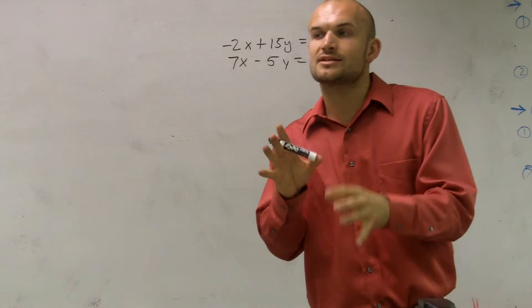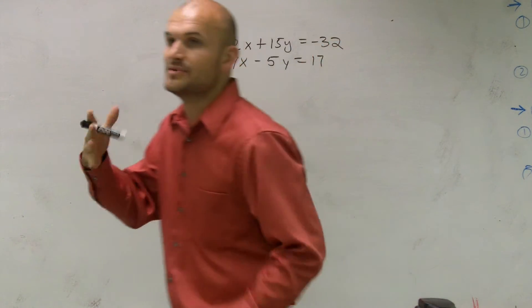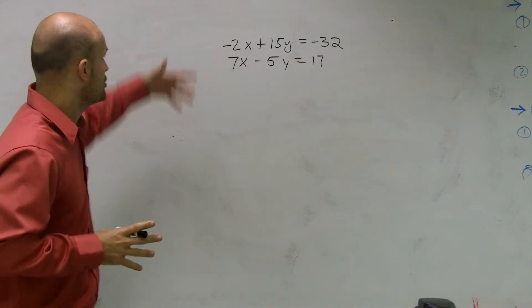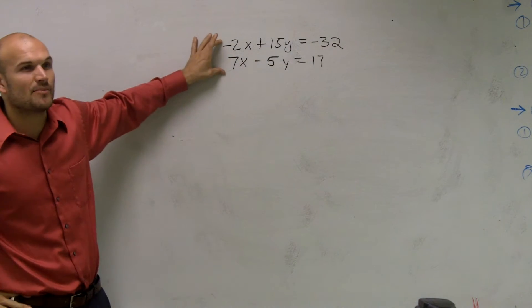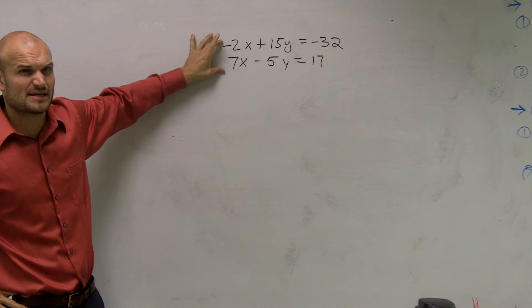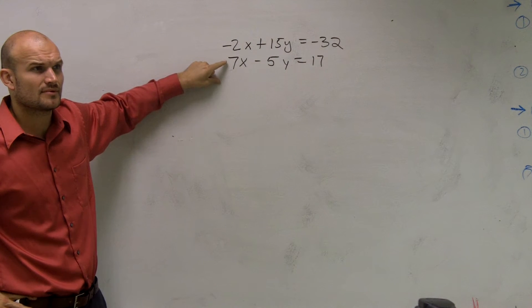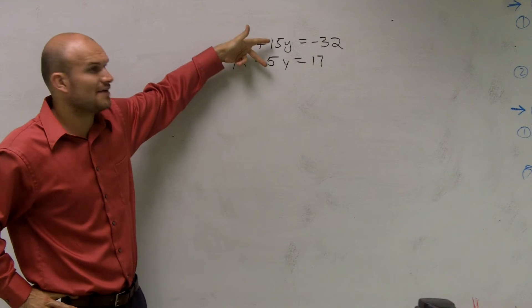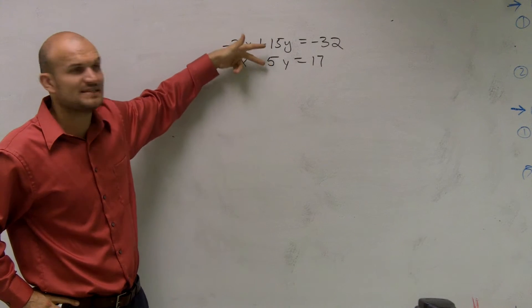when we're trying to do elimination, it's essential that we have the same number as our coefficient. So for our x's, do we have the same number in front? No, I have a negative 2 and a positive 7, right? And for the y's, do I have the same number in front? No, I have a 15 and a 5.